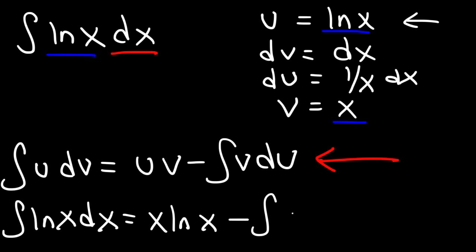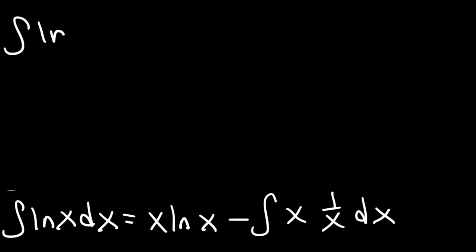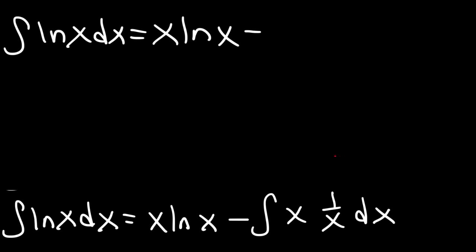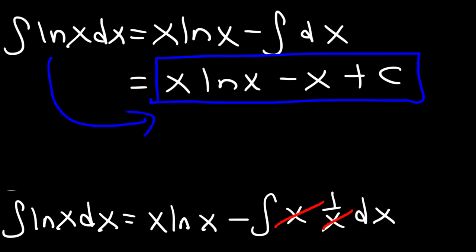And then minus the integral of v, which is x, times du. And du is 1 over x dx. Now let's simplify the expression. So x times 1 over x is 1 — the x variables will cancel. So we have the integral of 1 times dx, or simply dx. The integral of dx is x. So the answer is: the integral of ln(x) is x ln(x) minus x plus c.